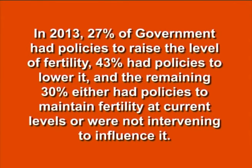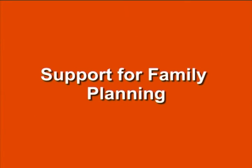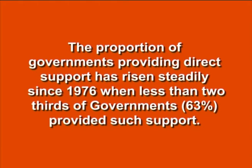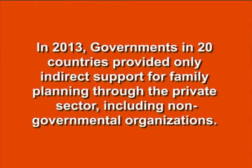In 2013, 27% of governments had policies to raise the level of fertility, 43% had policies to lower it, and the remaining 30% either had policies to maintain fertility at current levels or were not intervening to influence it. Regarding support for family planning, globally in 2013, 160 out of 197 governments (81%) provided direct support for family planning. The proportion of governments providing direct support has risen steadily since 1976 when less than two-thirds of governments (63%) provided such support. In 2013, governments in 20 countries provided only indirect support for family planning through the private sector including non-governmental organizations.